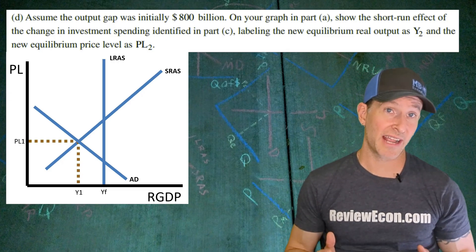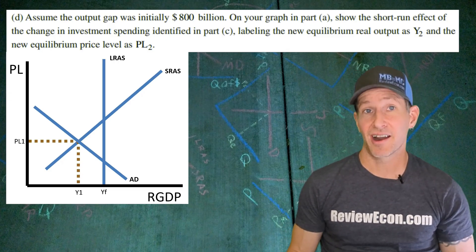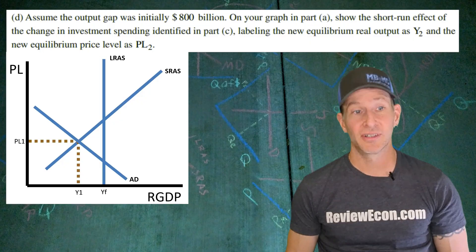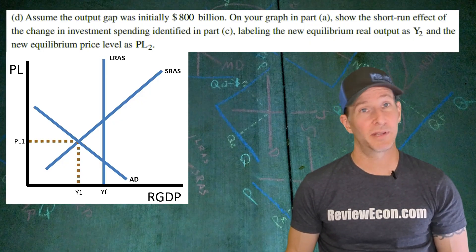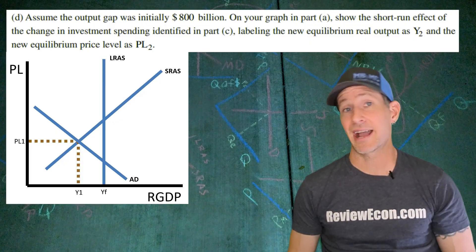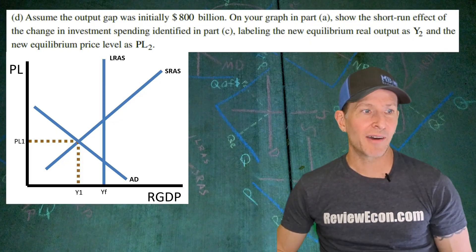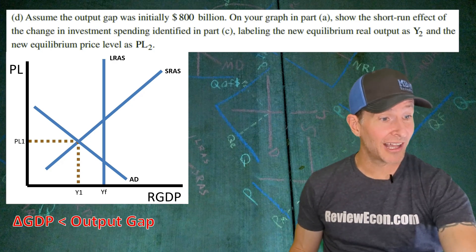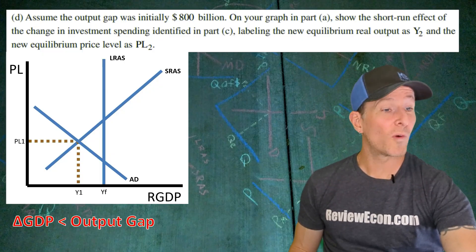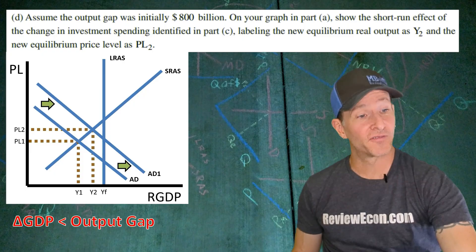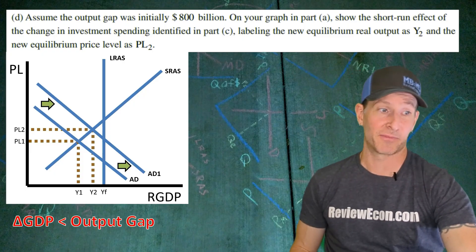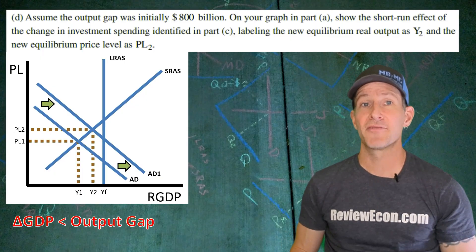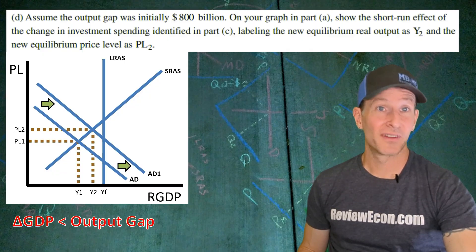For part D, we assume the recessionary gap is $800 billion, and we show the short-run impact of the $200 billion change in investment on price level and real output, labeling them Y2 and PL2. The increase in gross investment causes the aggregate demand curve to shift to the right. However, the change in real output is only $200 billion while the gap is $800 billion, so Y2 is still less than YF. You don't need to draw it to scale, but make sure Y2 is still less than YF to get the point.